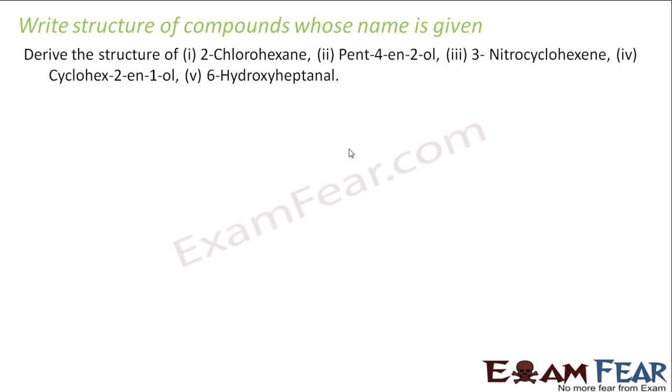Let us take this example: write the structure of 2-chlorohexane. So hexane is 6 carbons: 1, 2, 3, 4, 5, 6. Number it 1, 2, 3, 4, 5, 6. At second position, I have to add chloro. And hexane, so there is no double bond.